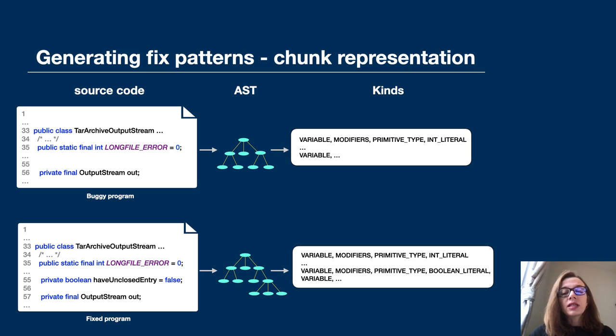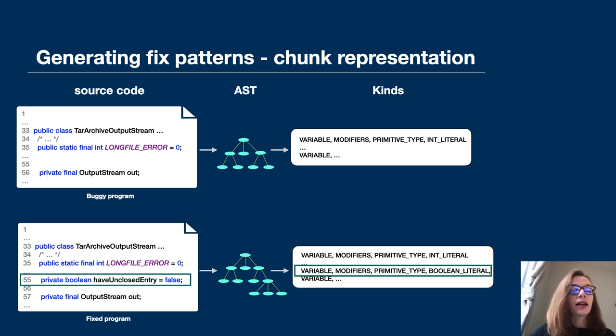If a fix is an inserted declaration of a variable, like in our example, then there are these four kinds that represent exactly this declaration of a variable. So we have a variable, a modifier, a primitive type, and a boolean literal.